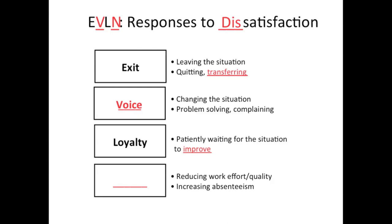Some people choose loyalty when dissatisfied — saying in essence, 'It won't be this way forever; if I hang in there, things will change.' Neglect, the N in the EVLN model, involves beginning to do a very poor job, consciously or unconsciously — being absent more often, performing carelessly, arriving late, calling in sick when not actually sick, and generally neglecting what it takes to do the job well.